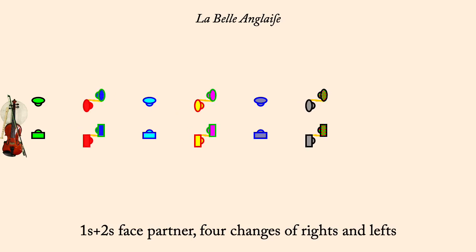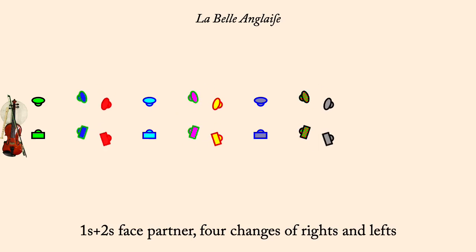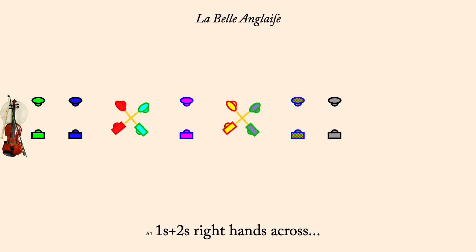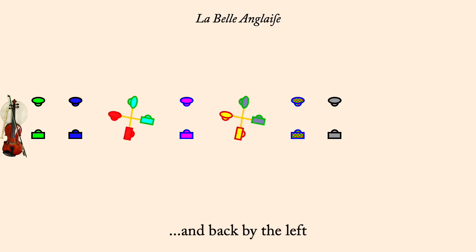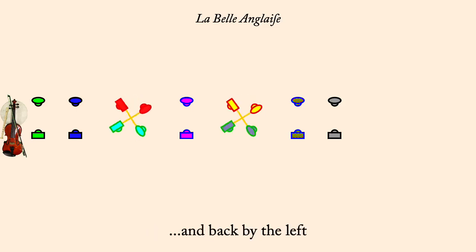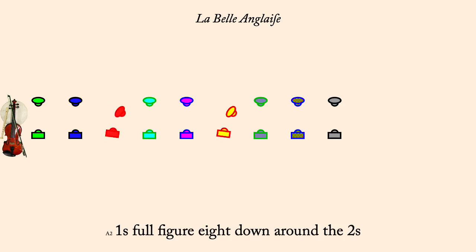Ones and twos, right hands across. And back by the left. Ones full figure eight down through twos.